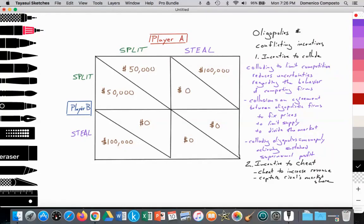If player B, that we see on the left side, steals, they will get the $100,000 if player A splits, and player A will get nothing. If both player A and player B decide to steal, they each walk away with nothing.